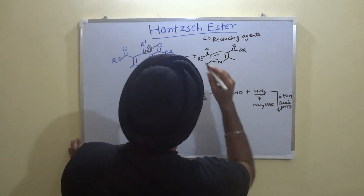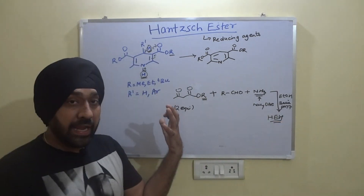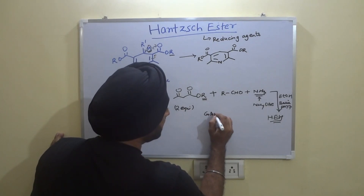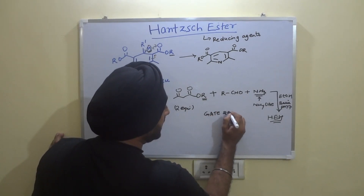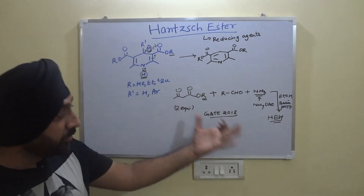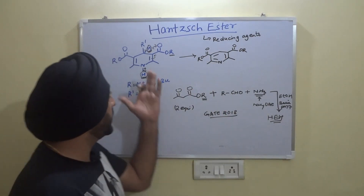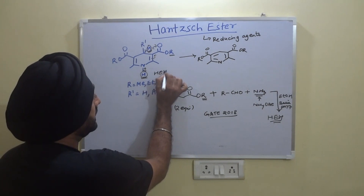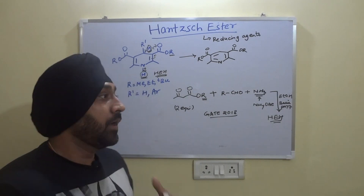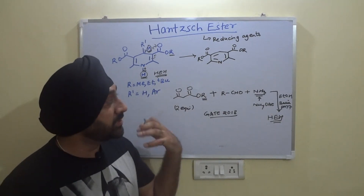This is a one-pot synthesis: when all these species are heated together, they end up giving us Hantzsch esters (HEH). This specific question was asked in GATE 2018, where you were given this reaction and asked what the product was. That is how Hantzsch esters are synthesized.